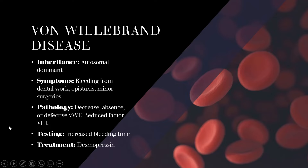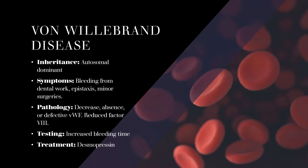The first disease state is von Willebrand disease. For USMLE Step 1, you really only need to know type one, which is autosomal dominant. Bleeds from primary hemostatic disorders are superficial, whereas bleeds from secondary hemostasis are deeper. With von Willebrand disease, you'll see bleeding from dental work, epistaxis, minor surgeries, and easy bruising. Females have heavy menses. The pathology is a decreased, absent, or defective von Willebrand factor, which connects the endothelium to the GP1B receptor.